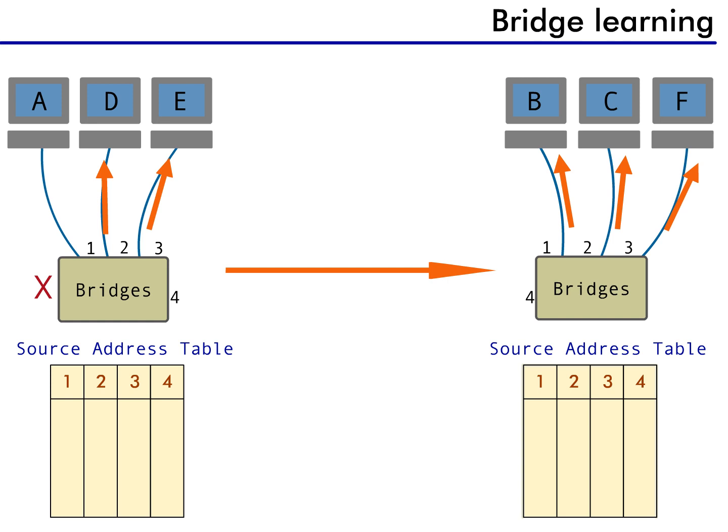The packet reaches the other bridge, Bridge Y, and the same process of flooding the packet occurs. As you can see, the packet eventually reaches Device C, however, that's not the end of the story.